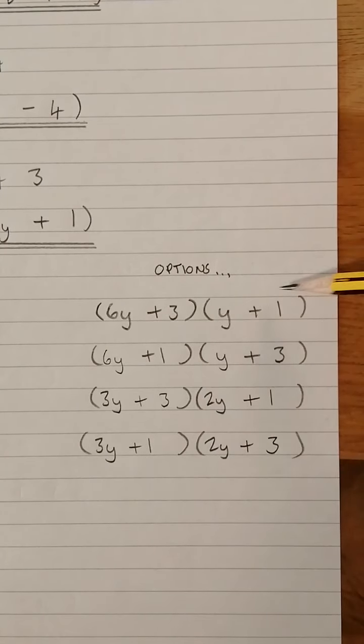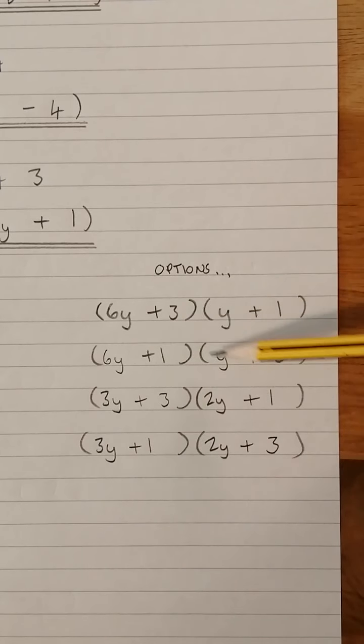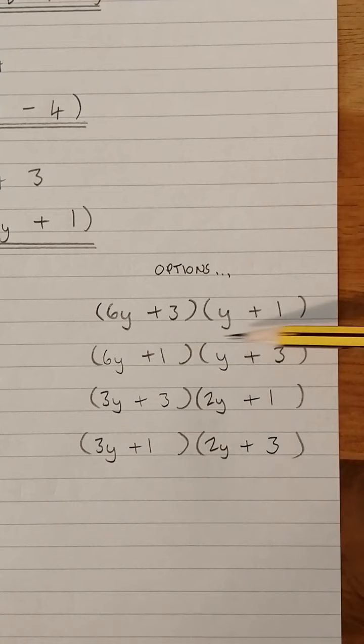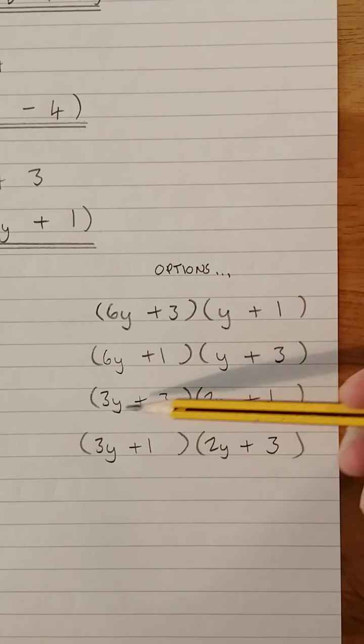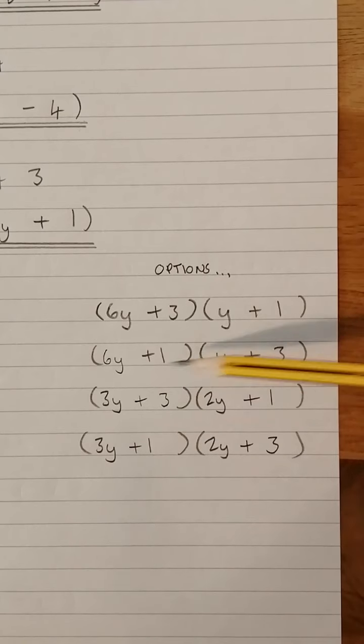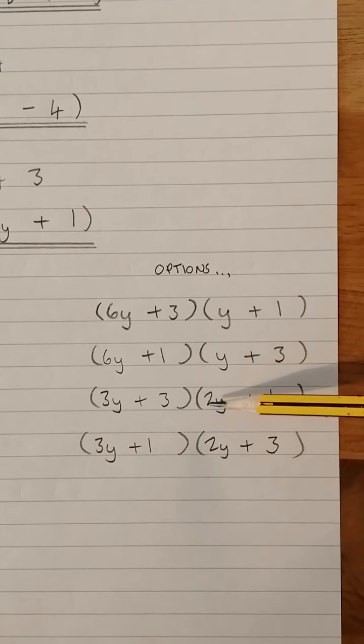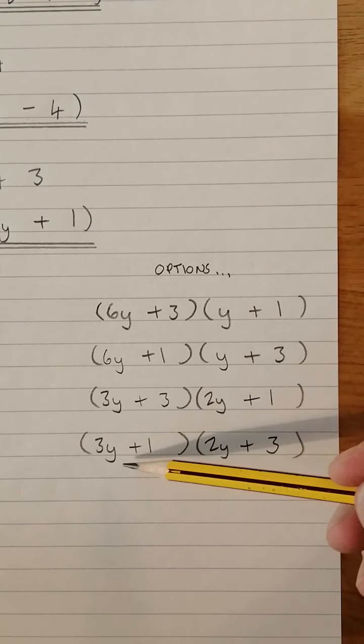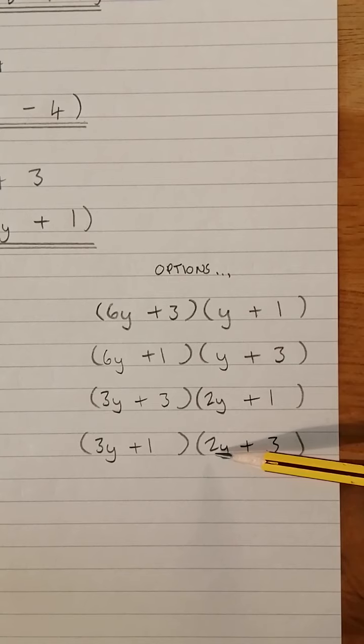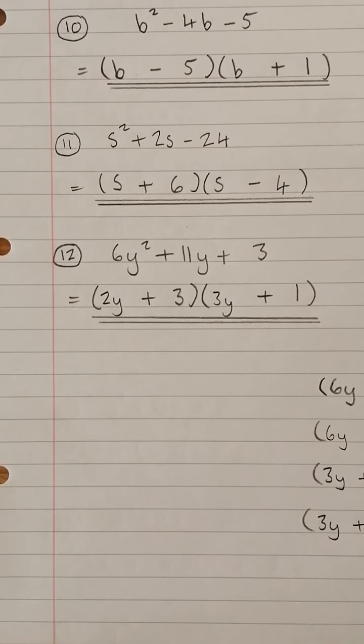6Y² + 6Y + 3 will give you +9Y, that's not good enough. 6Y² + 18Y + 1Y, that's going to give you +19Y, it's not what we want. 6Y² + 3Y + 6Y, that's going to give you +9Y. No, we're looking for +11Y. And of course, the one that's the answer, 6Y² + 9Y + 2Y gives you +11Y. And there we have it there.